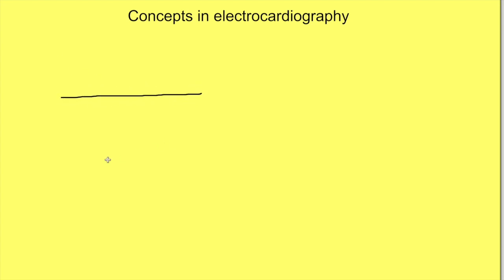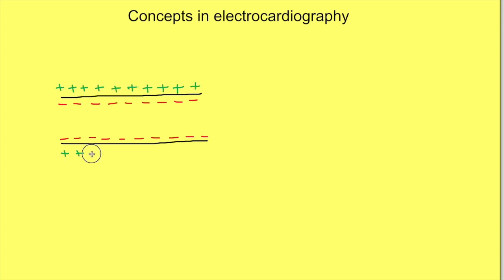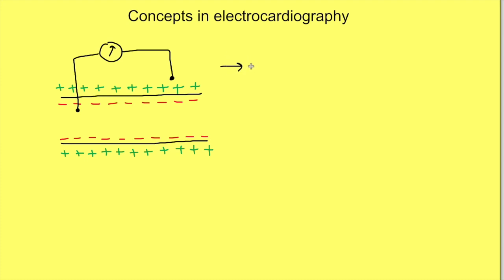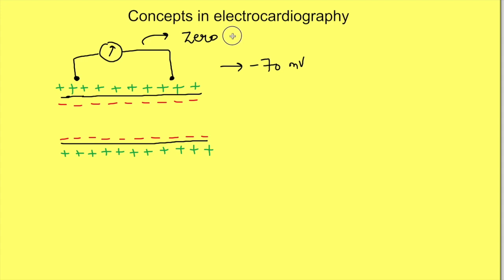First, let us see how the voltage will be recorded across the tissue if it is getting depolarized. Here is a cell which right now is in resting state, i.e., resting membrane potential with inside negative and outside positive. If we connect a voltmeter such that its one electrode is inside and one electrode outside, we will get the resting membrane potential, say minus 70 millivolts, since it is recording potential difference between its two electrodes. But if we place both electrodes outside, we will get zero volts as potential — both electrodes will have the same potential and the potential difference between them will be zero. So at this resting state, the potential will be zero.